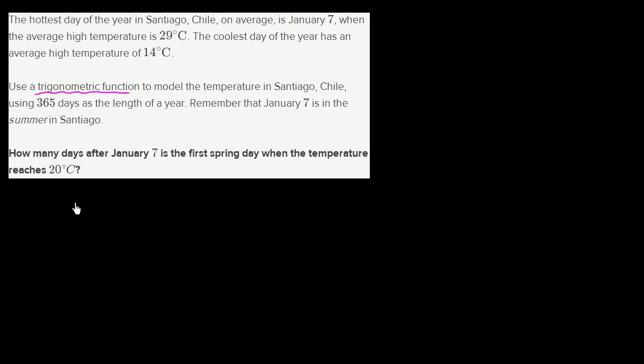So let's do this in two parts. First, let's try to figure out a trigonometric function that models the temperature in Santiago, Chile. We'll have temperature as a function of days, where days are the number of days after January 7. Once we have that trigonometric function, then we can answer the second part, the essential question: how many days after January 7 is the first spring day when the temperature reaches 20 degrees Celsius?